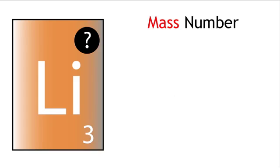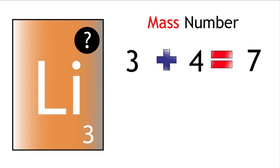And for the other form, the mass would be 3 plus 4 equals 7. So we would have Li 7.